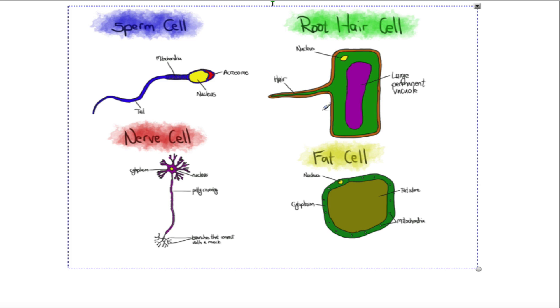A fat cell has this fat store in the middle and a vastly reduced cytoplasm to allow room for that. A nerve cell has a myelin fatty covering which insulates the signal and enables it to pass much more quickly. The structure enables it to pass messages along.